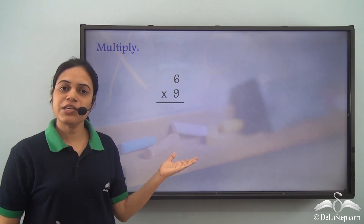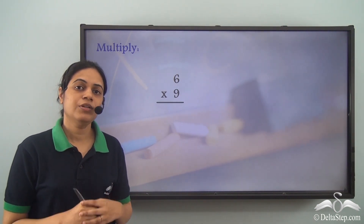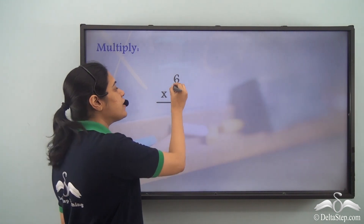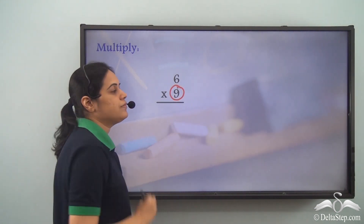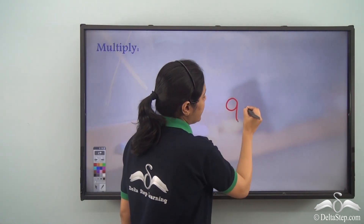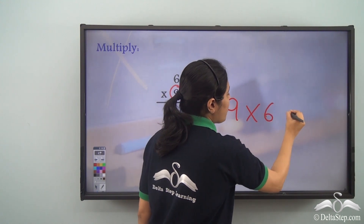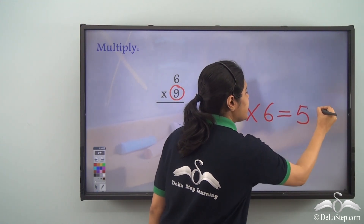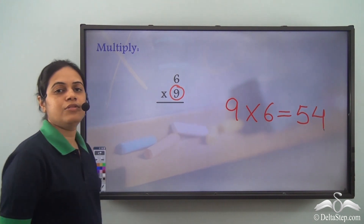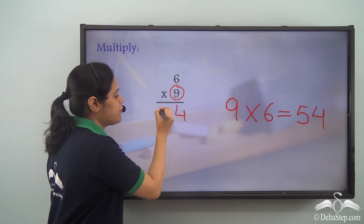Now can you tell me what is 6 into 9? Check the table of 9 — 9 into 6 from the table of 9 is 54. So the answer will be 54.